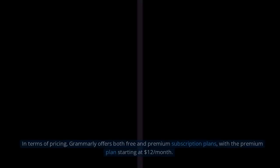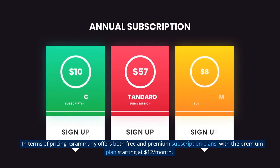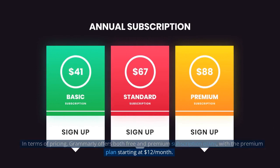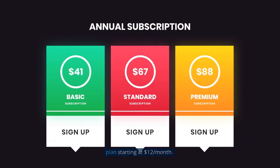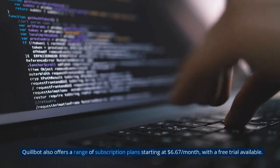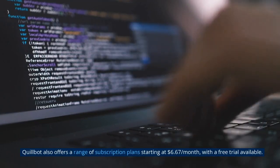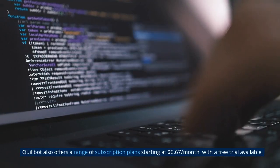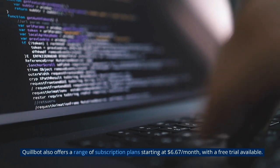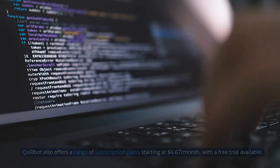In terms of pricing, Grammarly offers both free and premium subscription plans, with a premium plan starting at $12 per month. Quillbot also offers a range of subscription plans starting at $6.67 per month, with a free trial available.